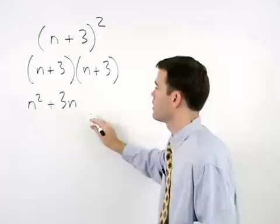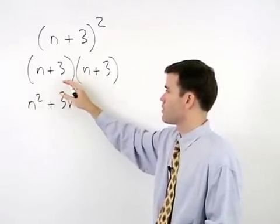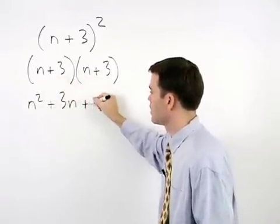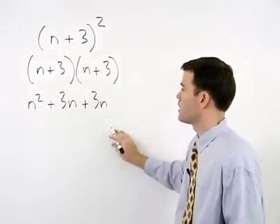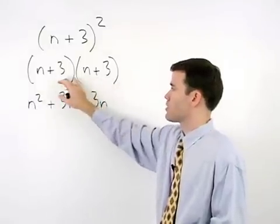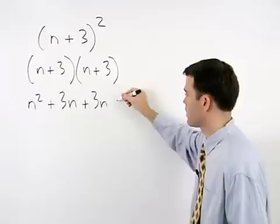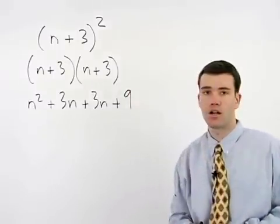Plus the product of the inner terms, positive 3 times n, is positive 3n, plus the product of the last terms, positive 3 times positive 3, which is positive 9.